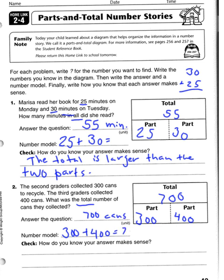Make sure they add that to their number model. How did they know the answer was correct? If they did the 3 plus 4 equals 7, and they added the 2 zeros. Added the 2 zeros to the end of their answer.